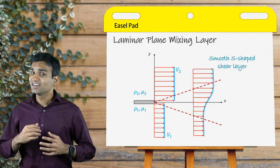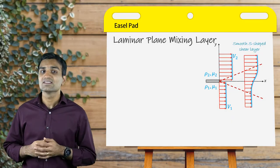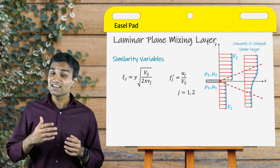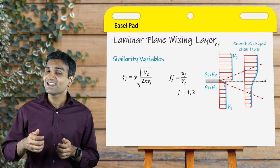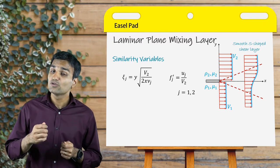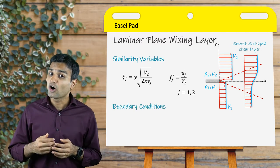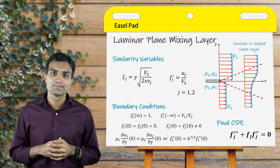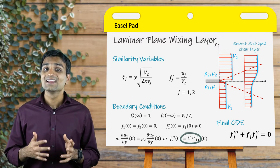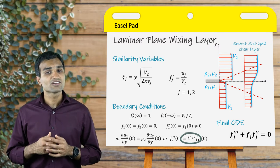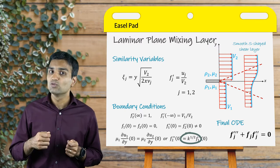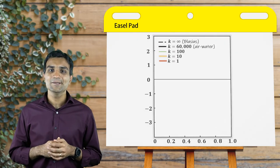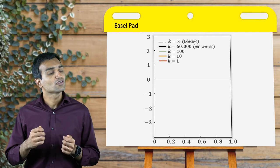An approximate analytical solution can be provided by following the same similarity solution approach. The similarity variables employed for this analysis are written out for each fluid region, and the third-order ordinary differential equation is solved using the following boundary conditions. Here, k is defined as the ratio of products of density and viscosity between fluid 1 and 2. This equation cannot be solved analytically and we use a numerical approach for the solution.